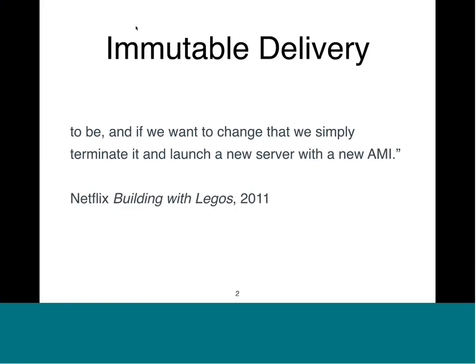Over the last five years or so, there has been a lot of interest in cloud computing and immutable delivery. Here's a quote by Netflix where they basically say: if I want to deploy a server, I want to know exactly what's in there. If I want to upgrade it, I simply terminate it and launch a new server. That means the server and the OS running on it is immutable — you basically build a server just for a particular task, and if you need to upgrade, you build a new one.